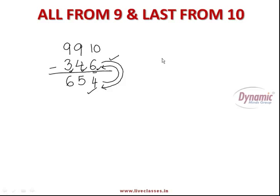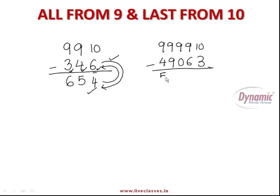Now let's find the complement of 49063. Subtracting all digits from 9 and the last from 10: 9 minus 4 is 5, 9 minus 9 is 0, 9 minus 0 is 9, 9 minus 6 is 3, and 10 minus 3 is 7. So 50937 is the complement of 49063, and 49063 is the complement of 50937.